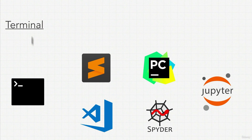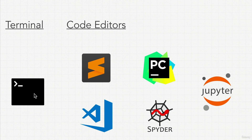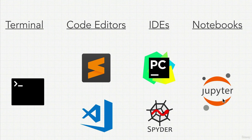First, we're going to have our terminal or command line, where we can run Python from right in what we call a repo. And then we're also going to use code editors, like Sublime Text and Visual Studio Code. We're also going to use IDEs, or integrated developer environments, like PyCharm and Spyder. And we're also going to use Jupyter notebooks.